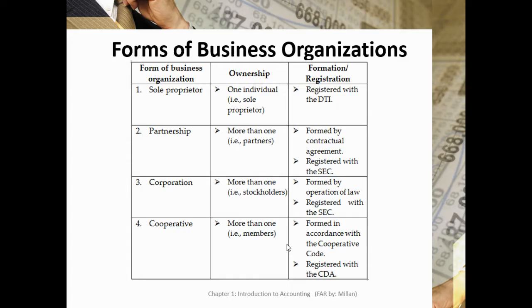For example, when you buy goods from a corporate business, you are actually transacting with the corporation and not its owners. If you get sick from consuming the goods, you will sue the corporation and not its owners. The corporation has its own legal identity — you cannot go after the owners or founders of a company; you go after the corporation itself. A partnership also has a juridical personality; however, unlike in corporations, the partners are viewed as agents of the partnership, meaning the partners transact on behalf of the partnership. If you transact with a partner, you are transacting with the partnership through the partner, while transacting with a stockholder does not necessarily mean you are transacting with the corporation.